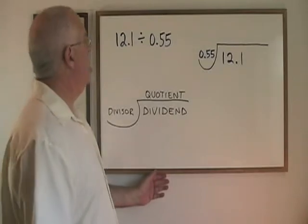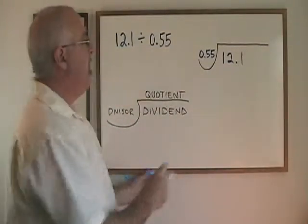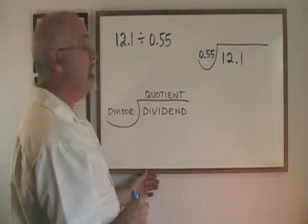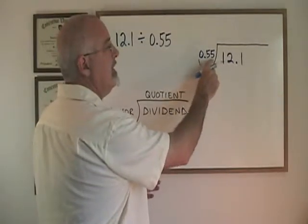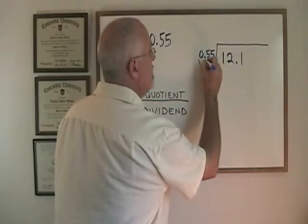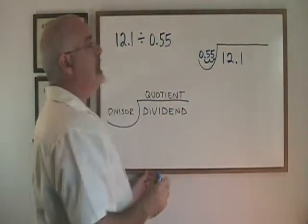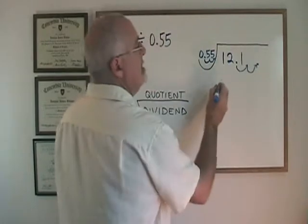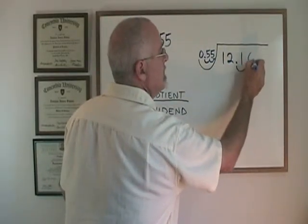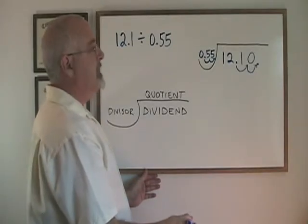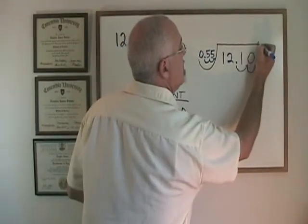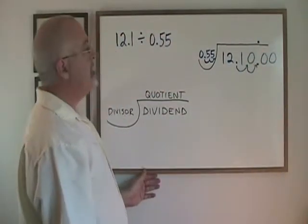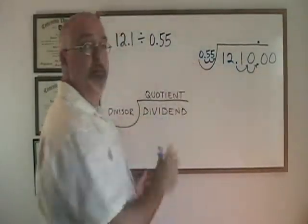In this example, both the dividend and the divisor have decimals. But I set it up the same way. And my first question is: is the decimal in the right place in my divisor? No, it's not. I want the decimal to the right of the numbers, so I have to move it two spaces to the right. Which means that I am also moving the decimal in the dividend two spaces to the right. That means my decimal is up here in my quotient. And I draw some extra zeros, as many as I want. I am now dividing 1210 by 55.